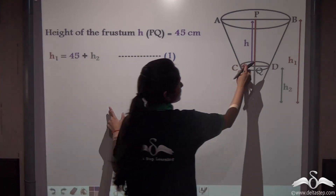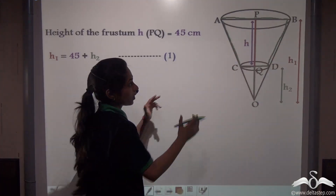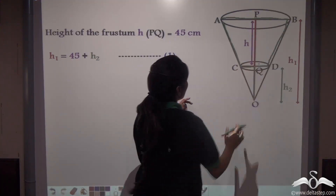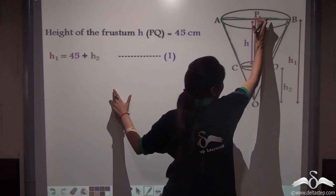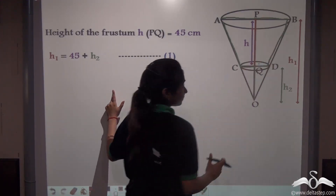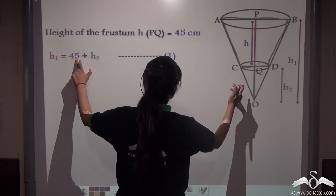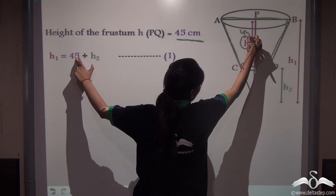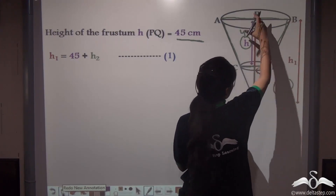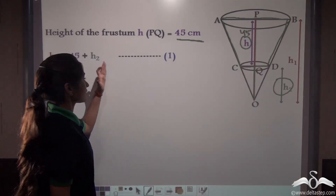The frustum is the big cone minus the smaller cone. H represents the height of the frustum, H1 the height of the bigger cone, and H2 the height of the smaller cone. We are given that the height of the frustum H is 45 centimeters. So H1 equals 45 plus H2. This gives us our first equation.